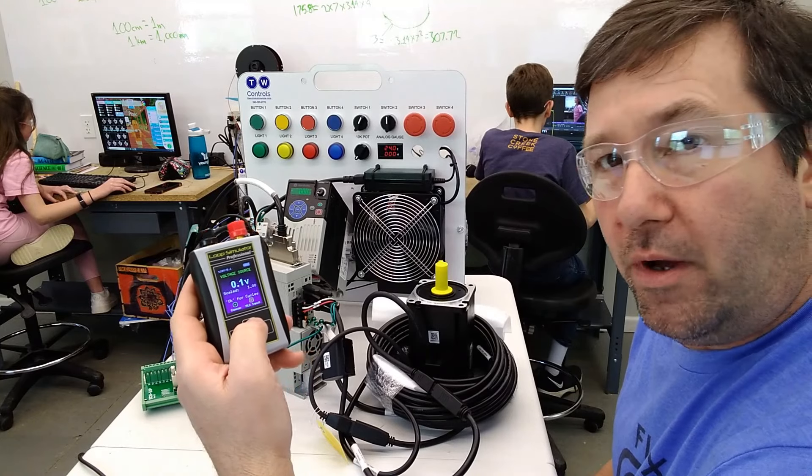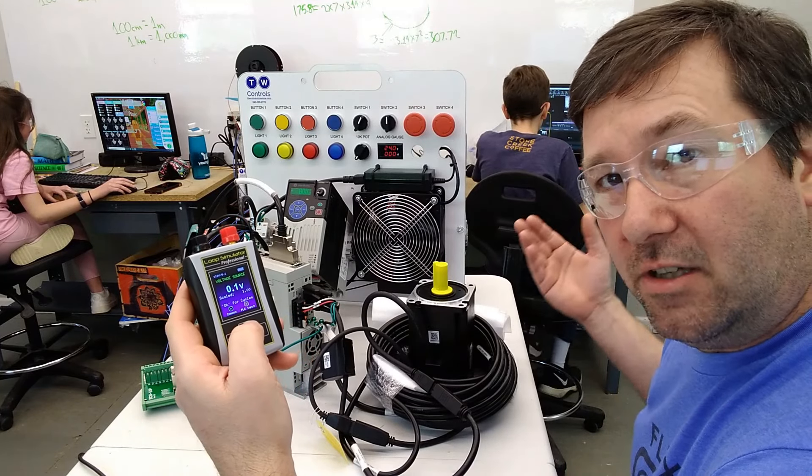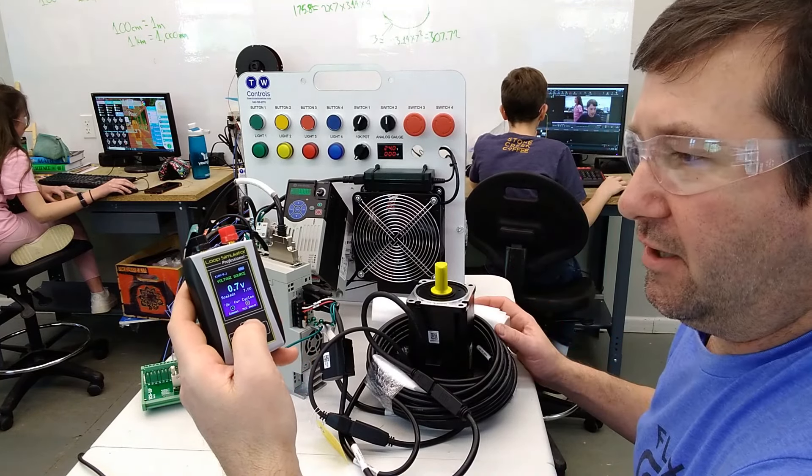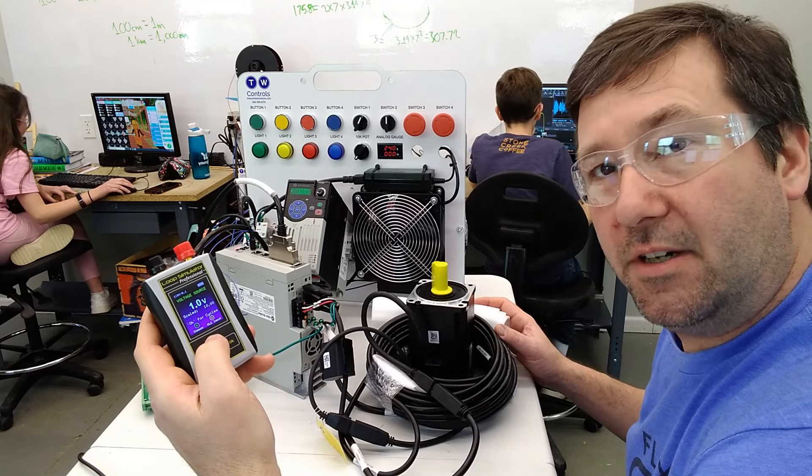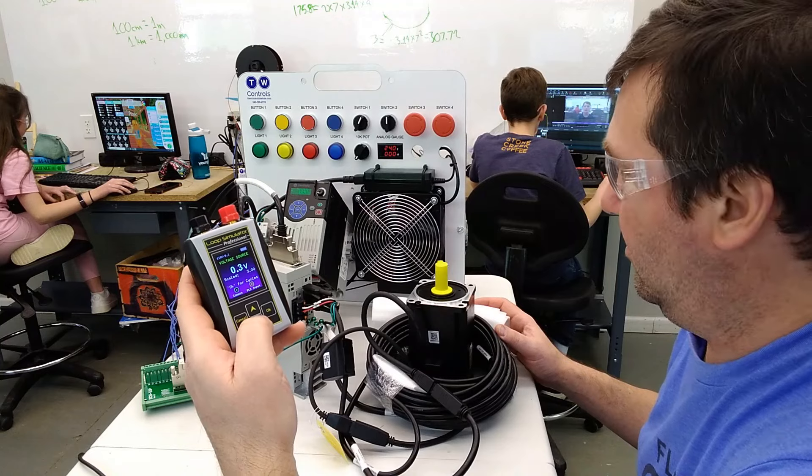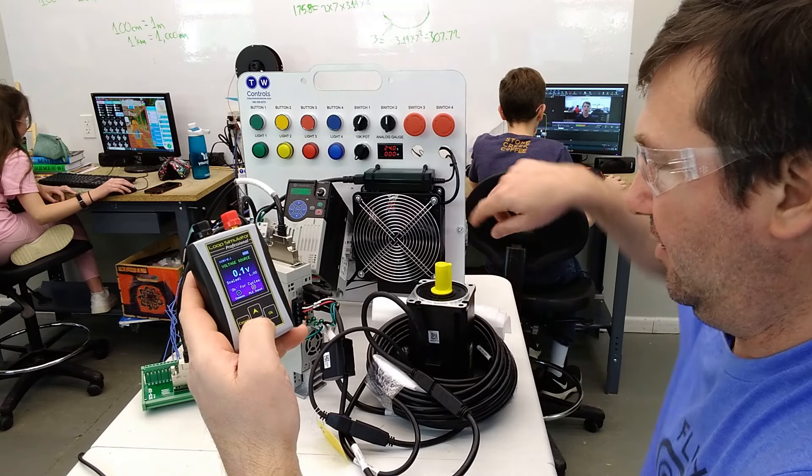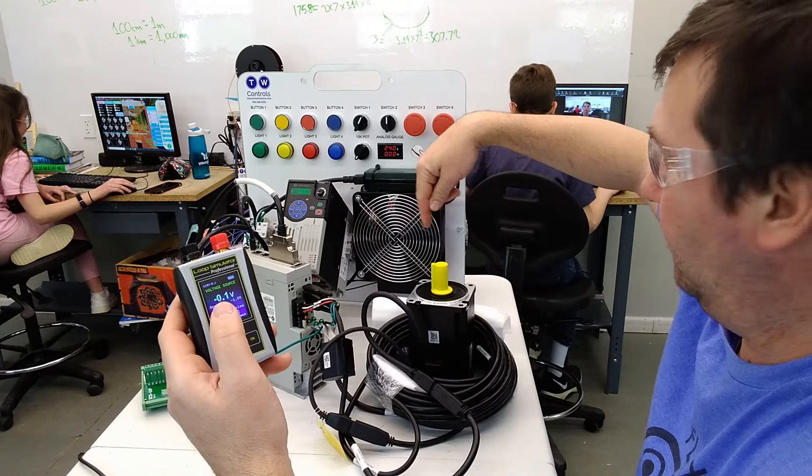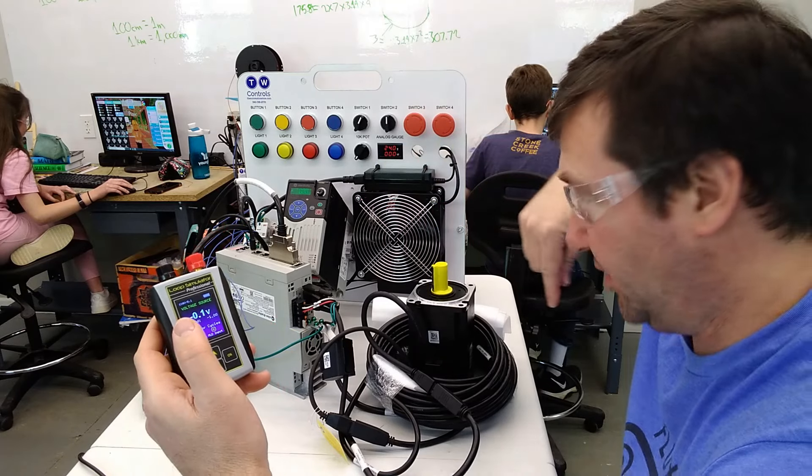We're at 0.1 volt here. You can see it slowly rotating around. If we bring it on up to say 1 volt, it's going faster. We'll bring it back down near 0.1 volt, slowly going in this direction. As soon as we go to negative 0.1, it's going to start going the other direction.